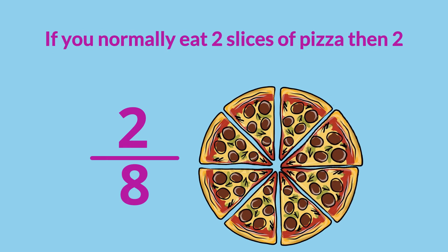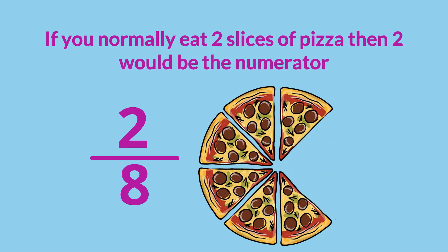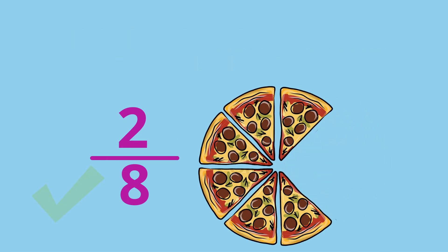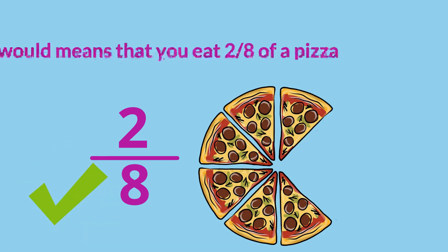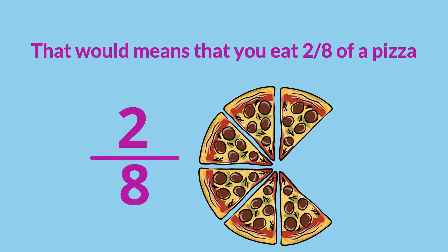If you normally eat 2 slices of pizza, then 2 would be the numerator. The denominator would still be 8 since there are always 8 slices of pizza. That would mean that you eat 2 eighths of a pizza.